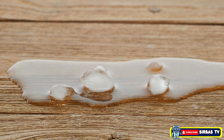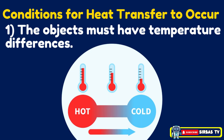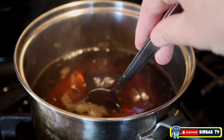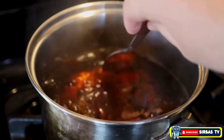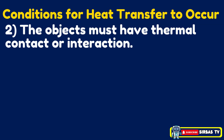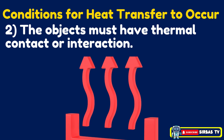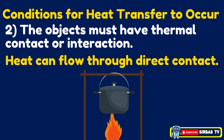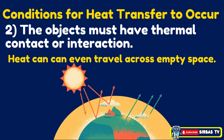Heat transfer occurs only when two conditions are present. First, there must be a temperature difference — heat always flows from a hotter object to a cooler one. For example, when you touch a hot spoon, heat is transferred from the spoon to your hand, making your hand feel warm. Second, there must be thermal contact or interaction. The objects must be able to exchange energy, which can happen in several ways: heat can flow through direct contact, through a fluid such as air or water, or even travel across empty space without touching anything.